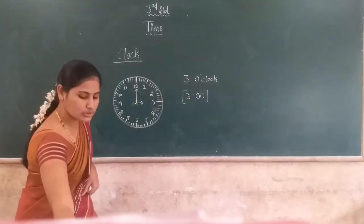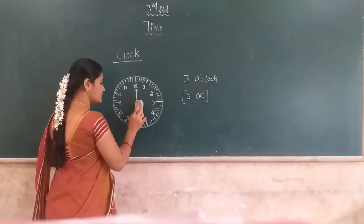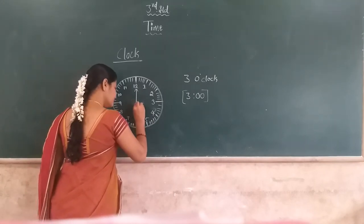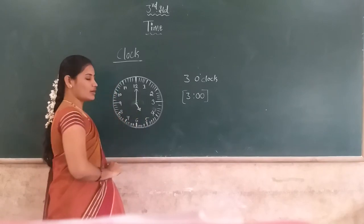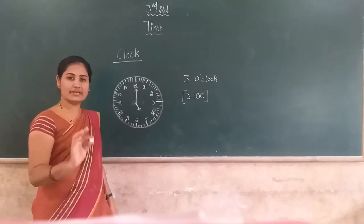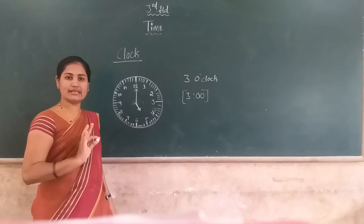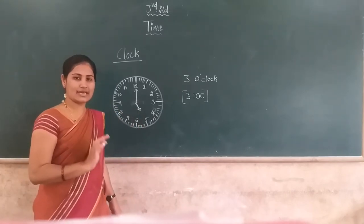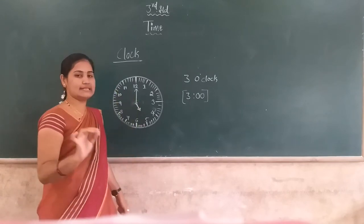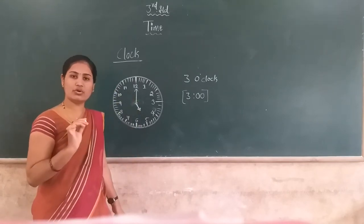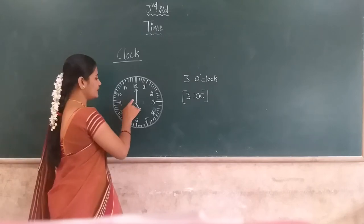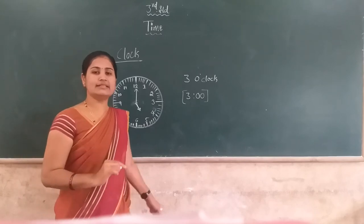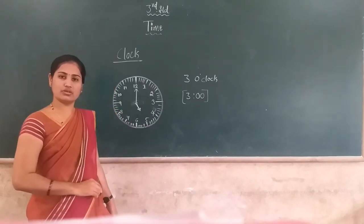Dear student, observe the position of the hour hand. What is the time now? The minute hand is exactly at 12, but the hour hand is at 5. What is the time now? The time is 5 o'clock — exactly 5 o'clock — because the minute hand is at 12 and the hour hand is at 5.